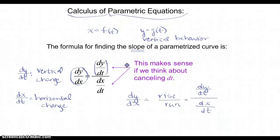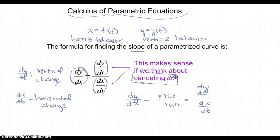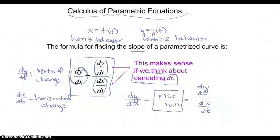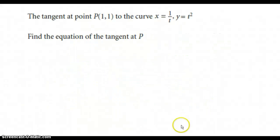We find the derivative of the y-function with respect to t and the derivative of the x-function with respect to t. Algebraically, if we treat these as fractions, we can cancel the dt on top and bottom, leaving dy/dx. So dy/dx = g'(t) / f'(t) — really easy calculus on these functions.